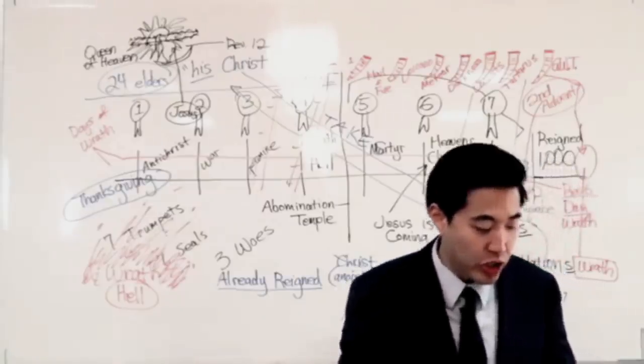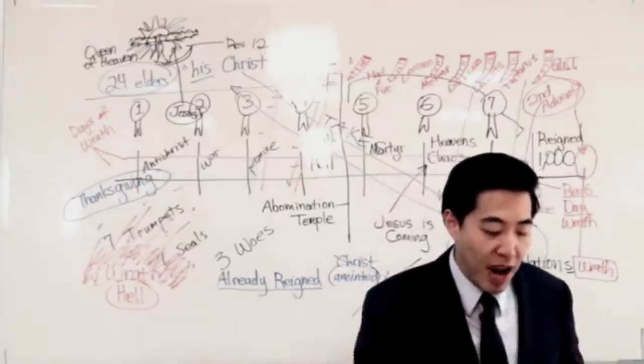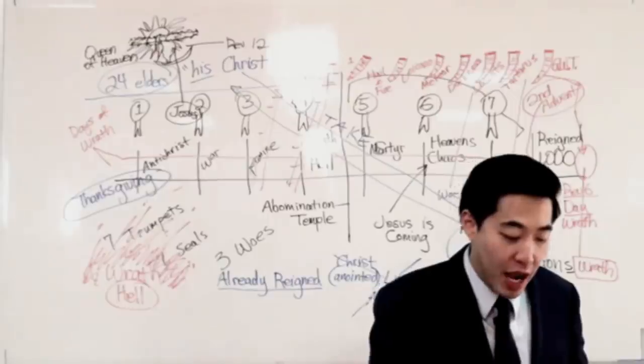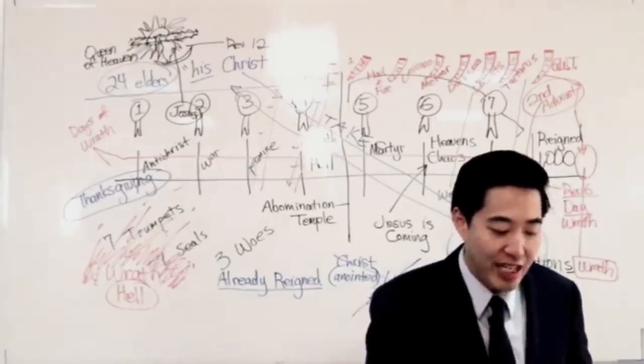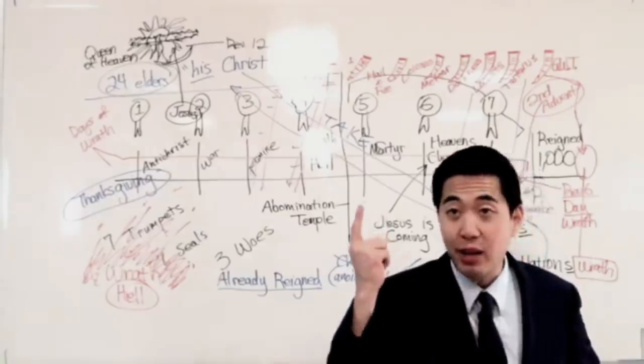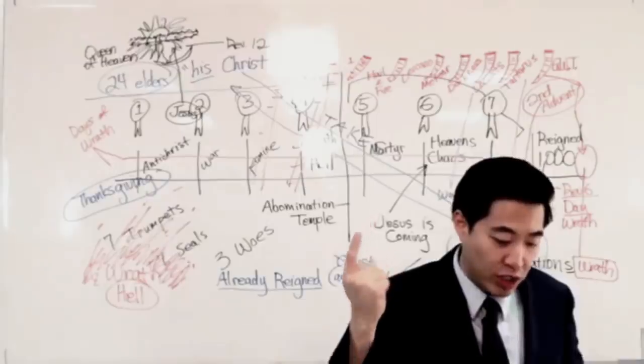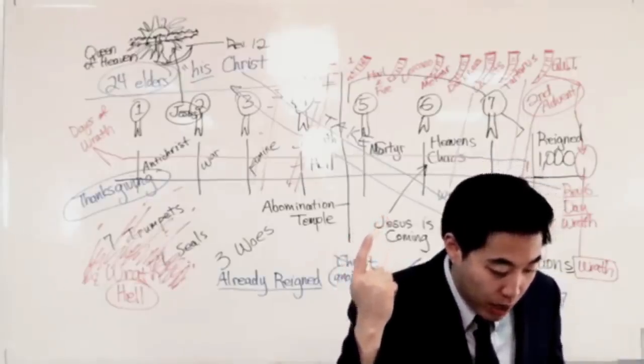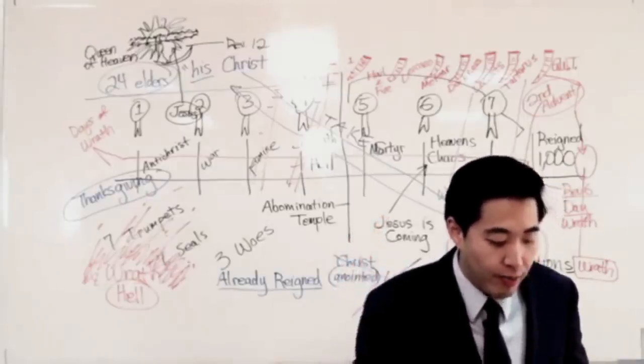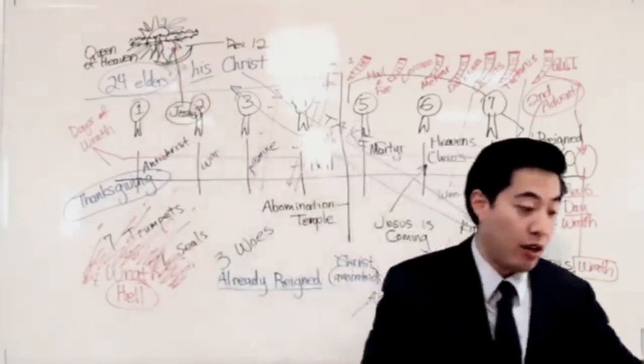Verse 16, Galatians chapter 3 and verse 16: Now to Abraham and his seed were the promises made. He saith not, and to seeds, as of many, but as of one. One seed, right? Who is this one seed from Israel's line? And to thy seed, which is what? Christ. See, it is true Jesus is of that seed.